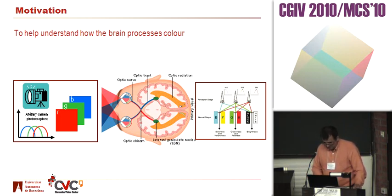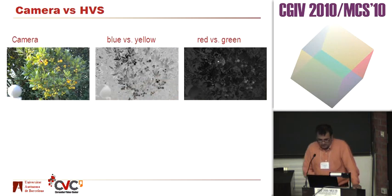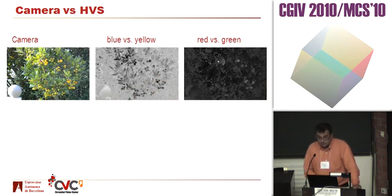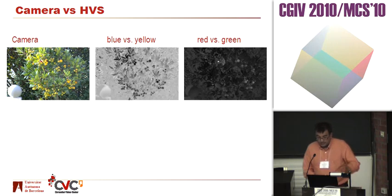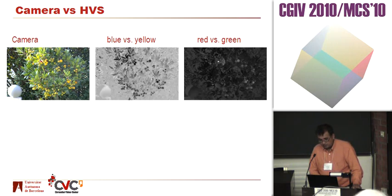To show you what happens if you just use the RGB planes of the camera and combine them to form, for example, blue versus yellow or red versus green, you get these sort of images.